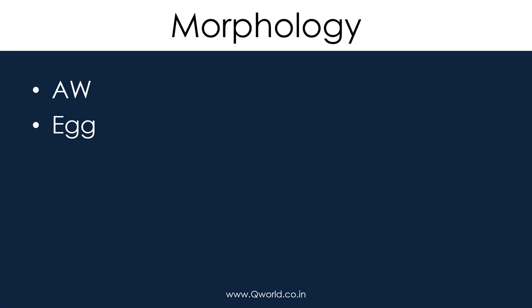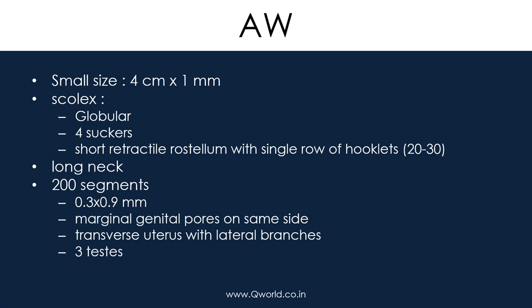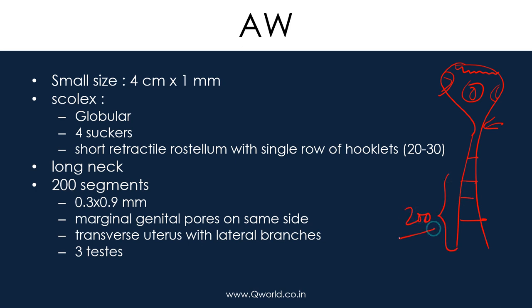The adult worm is small in size. It has four suckers and one globular head. There is a rostellum with a single row of hooklets. A long neck is seen, and there are segments limited to approximately 200. The transverse uterus with lateral branches is seen.